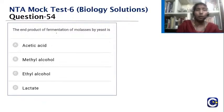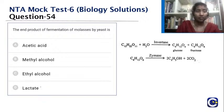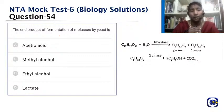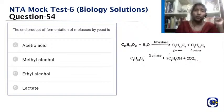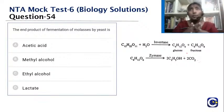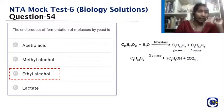The end product of fermentation of molasses by yeast: fermentation is incomplete oxidation of glucose where, in anaerobic conditions, pyruvic acid is converted to ethyl alcohol and carbon dioxide. Enzymes like invertase help convert glucose and fructose, forming alcohol with carbon dioxide. This process is used in food preservation industries. The answer is ethyl alcohol.